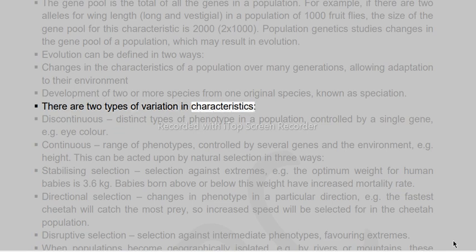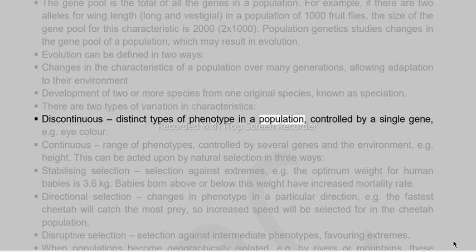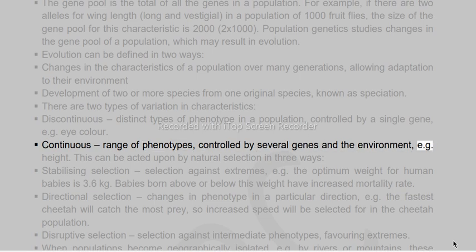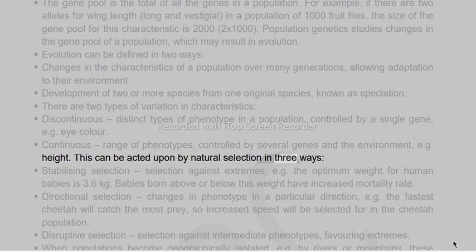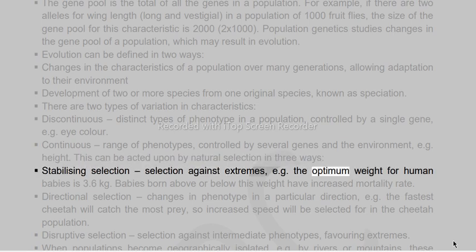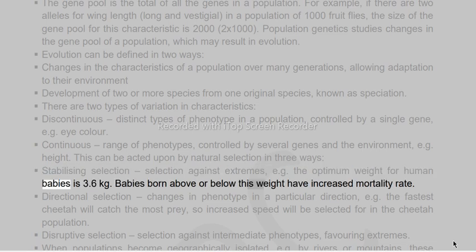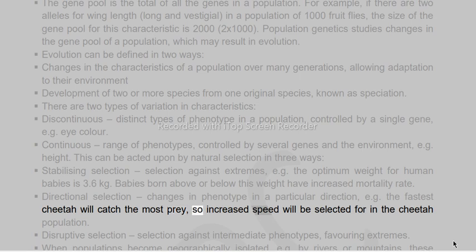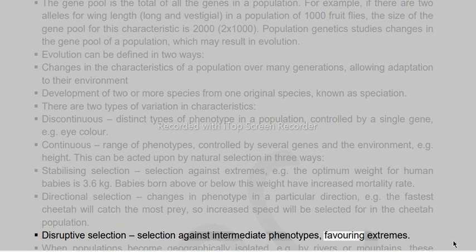There are two types of variation in characteristics: discontinuous (distinct types of phenotype controlled by a single gene, e.g. eye colour) and continuous (range of phenotypes controlled by several genes and the environment, e.g. height). Natural selection acts in three ways: stabilizing selection (selection against extremes, e.g. optimum birth weight for humans is 3.6 kg — babies above or below this have increased mortality); directional selection (changes in phenotype in a particular direction, e.g. the fastest cheetah catches the most prey); and disruptive selection (selection against intermediate phenotypes, favouring extremes).